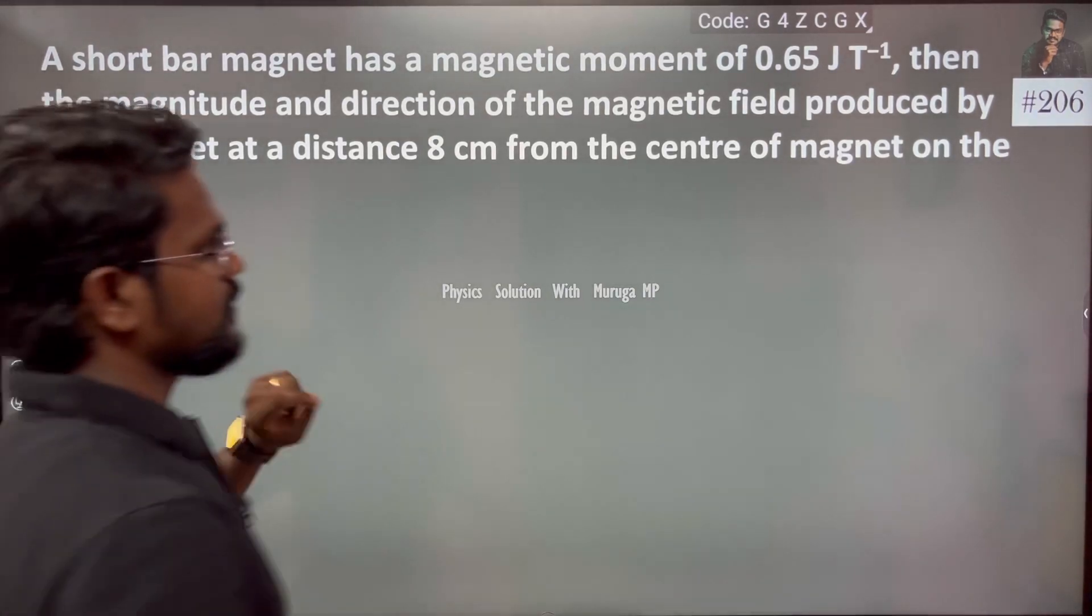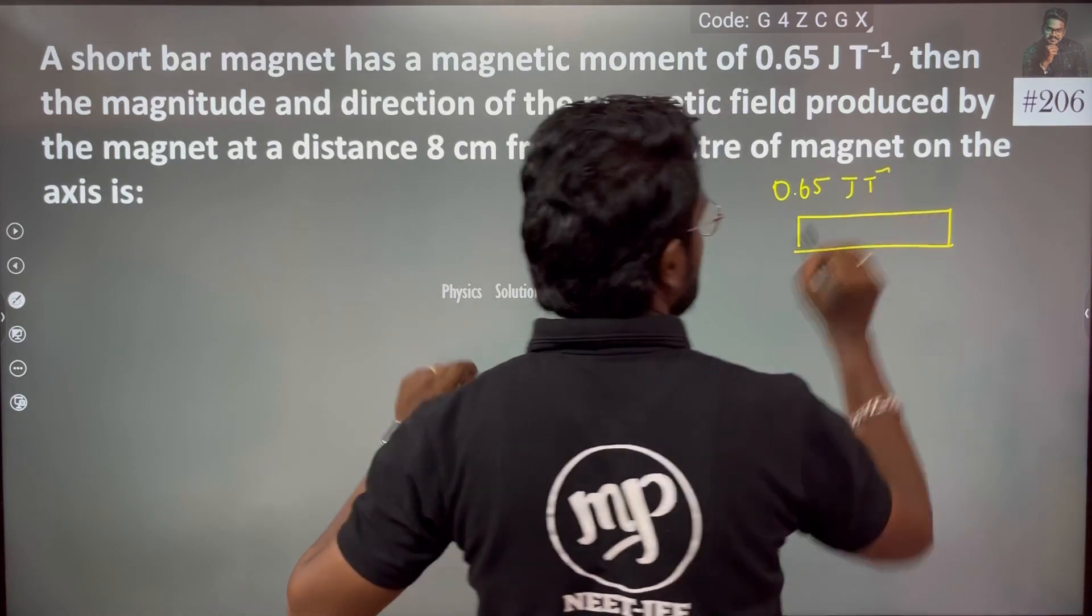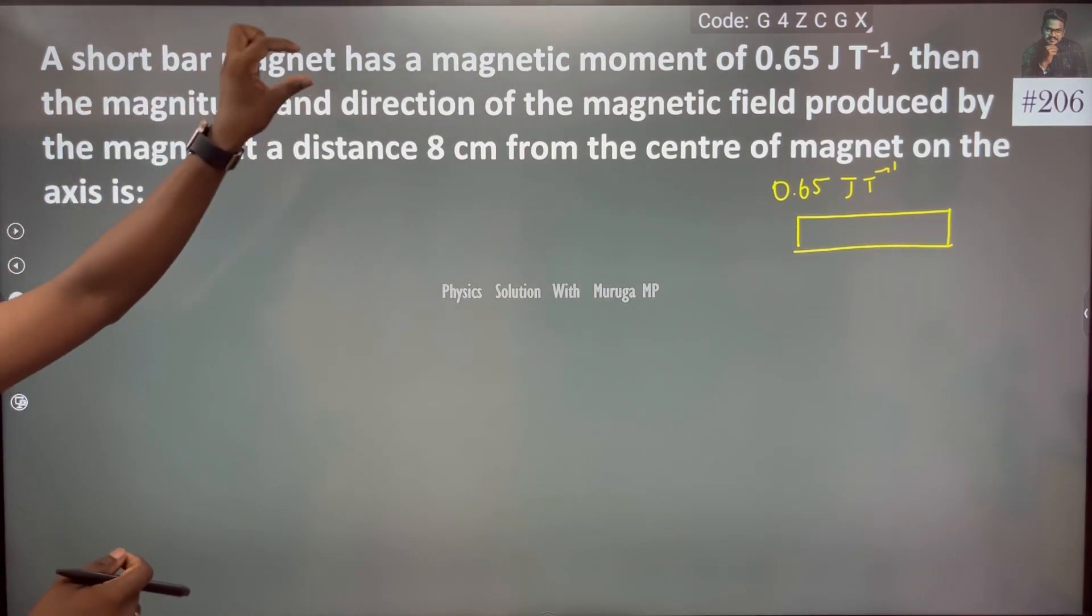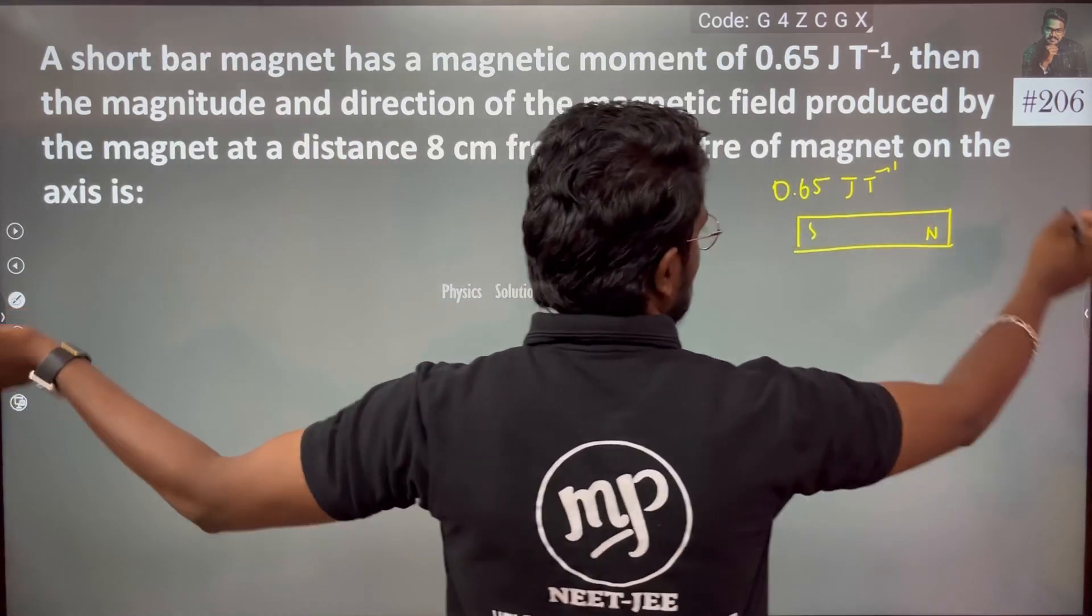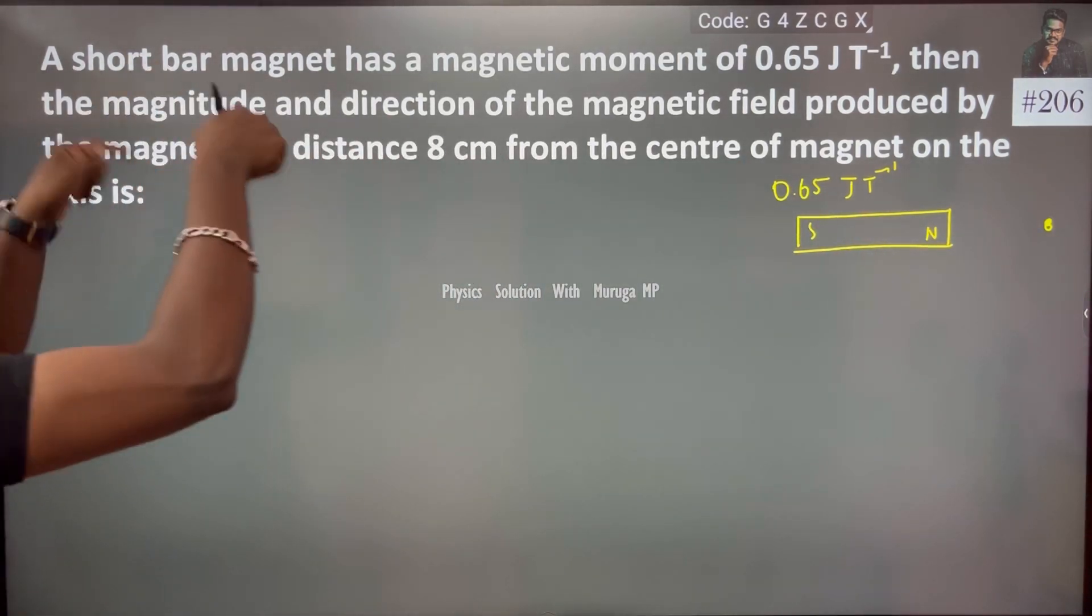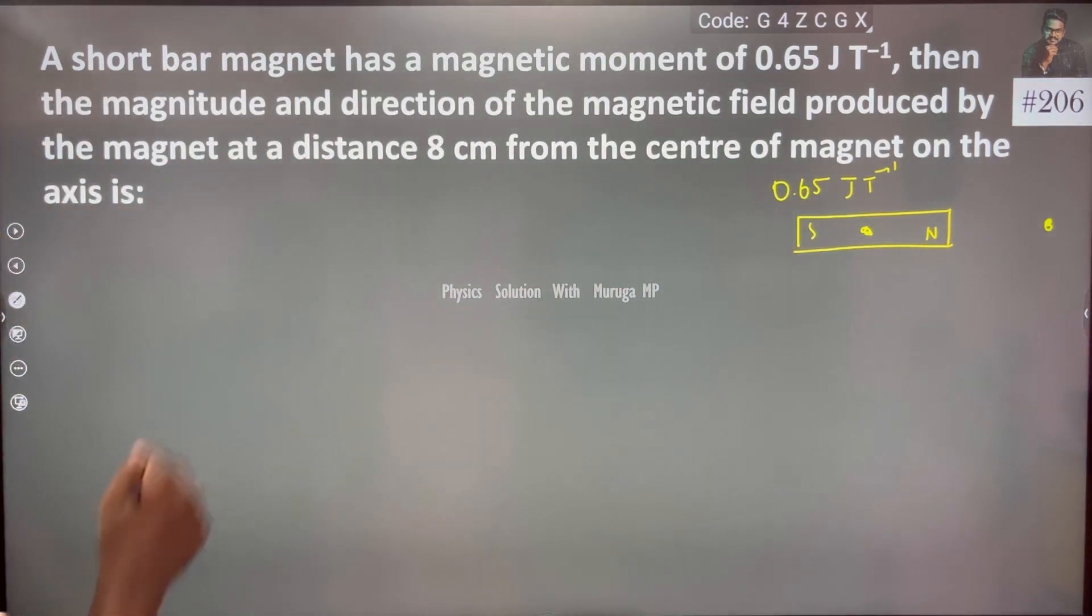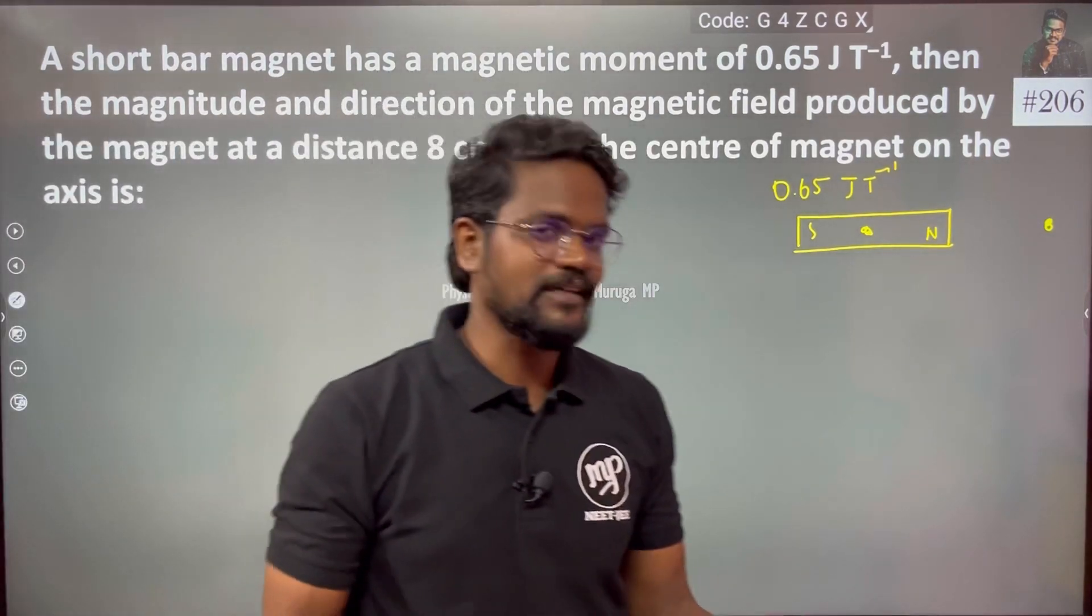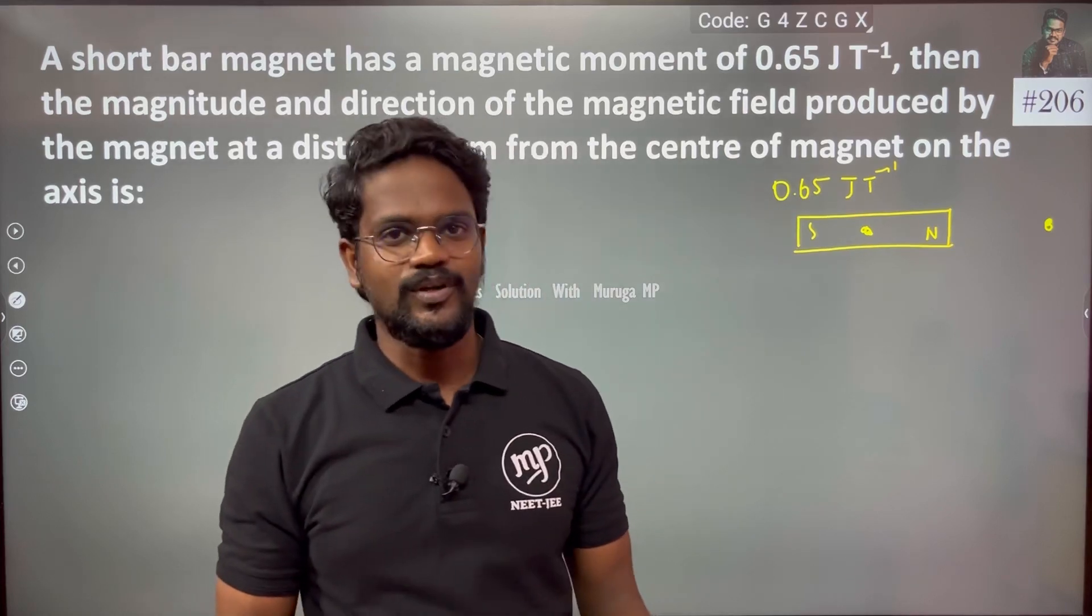The bar magnet magnetic moment is 0.65 J per tesla. Then the magnitude and direction of the magnetic field are produced by the magnet at a distance of 8 centimeter. Let us say this is the south and north pole on the edge of the magnet at a distance of 8 centimeter from the center of the bar magnet on the axis. It's very simple.